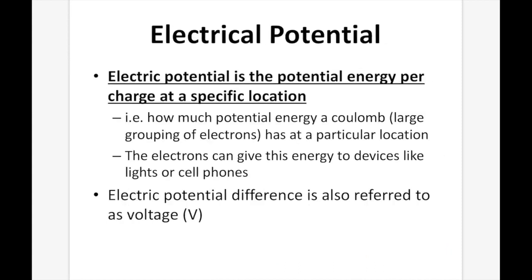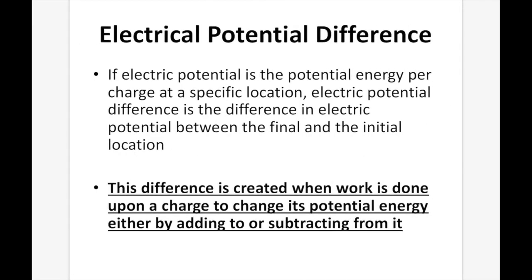Electrical potential is potential energy per charge at a specific location — for example, how much potential energy a coulomb (a large grouping of electrons) has at a particular location. The electrons can give this energy to devices like lights and cell phones. Electric potential difference is also referred to as voltage. If electric potential is the potential energy per charge at a specific location, electric potential difference is the difference in electric potential between the final and initial location. For example, if point A has 100 volts and point B has 50 volts, the electric potential difference between them is 50 volts.